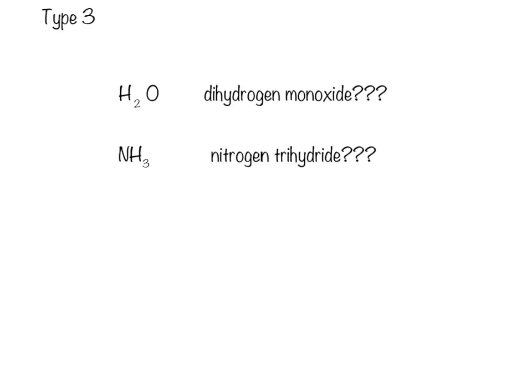So, to sum up, the type 3 nomenclature is pretty simple. But you need to make sure that you do not confuse type 1 and type 2 and type 3. Especially when it comes to our polyatomics. CO3 2- is not carbon trioxide. That is the carbonate ion. So, those two, no. Okay? So, make sure you know the difference between your polyatomic anions and your type 3 compounds.